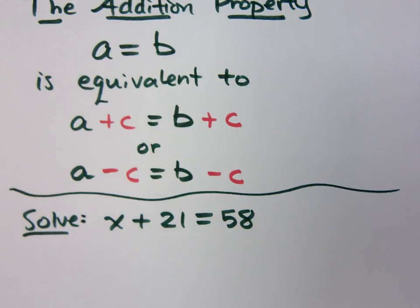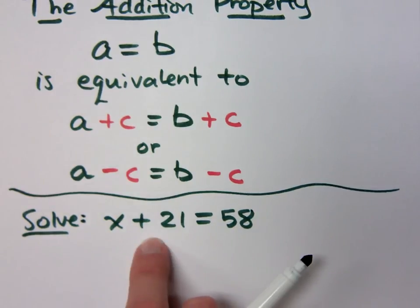Subtract. I need to move the, I need to get rid of the 21, so the, here's the keyword, the inverse operation of adding 21 is subtracting 21, right? The inverse operation. Like if I said, what's the inverse of multiplication is what? Division. Division. All right.